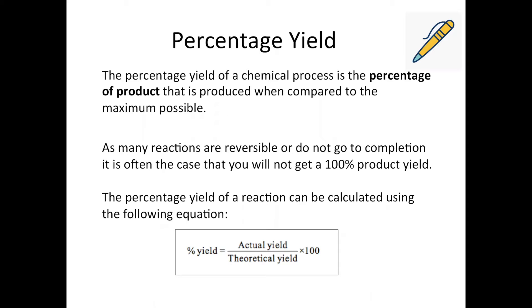So most chemical reactions that happen in industry, especially within drug production, medicine production, or a lot of organic carbon-based chemistry, a lot of those reactions are reversible, so we tend not to really get 100% product yield, and so you wouldn't manage to convert all of your reactants into, say, paracetamol.